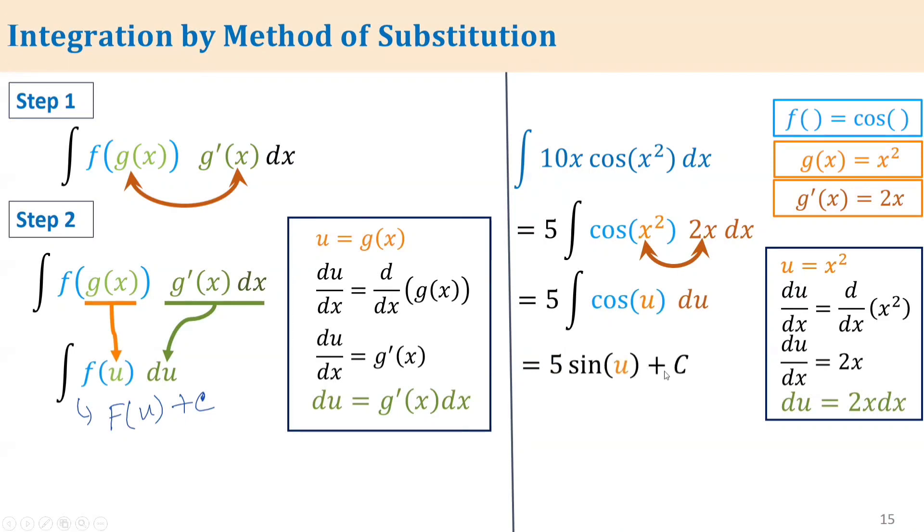The result is negative 5 sine u plus C. Since u equals x squared from our substitution, we replace u back with x squared. This substitution method provides a rule for solving these types of integrals.